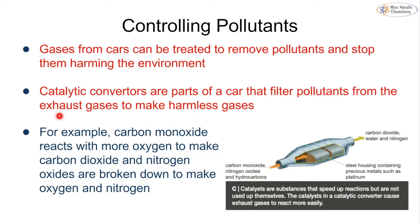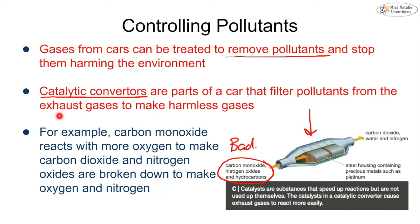Gases from cars can be treated to remove pollutants using a catalytic converter. As shown in the diagram, the poisonous gases — carbon monoxide, nitrogen oxide, and hydrocarbons — pass through the catalytic converter, which contains platinum and facilitates special reactions. The outputs are carbon dioxide, water, and nitrogen. Carbon dioxide isn't ideal, but it's much better than carbon monoxide and nitrogen oxide, and water and nitrogen are already all around us.